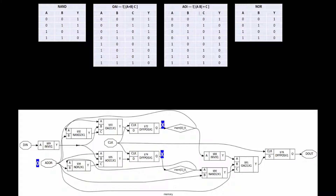For the AOI gate — AND-OR-Invert — you first AND inputs A and B, then OR the result with C, then invert the entire thing. For example, with A=0, B=0, C=1: A AND B = 0; 0 OR 1 = 1; invert of 1 = 0. So the output is 0.